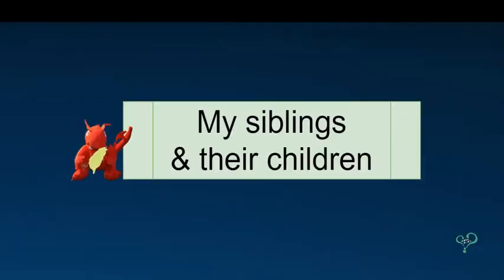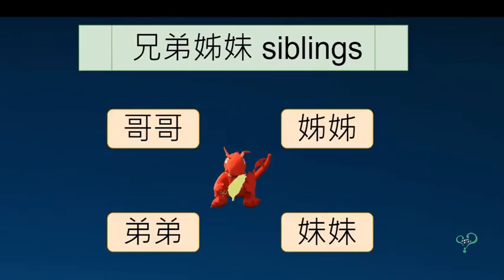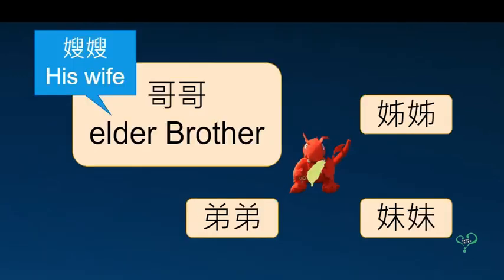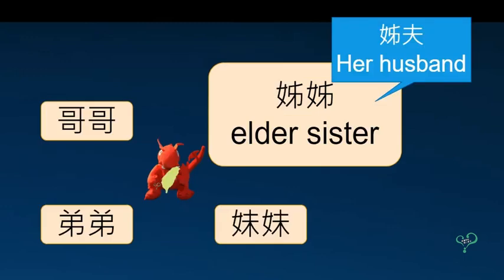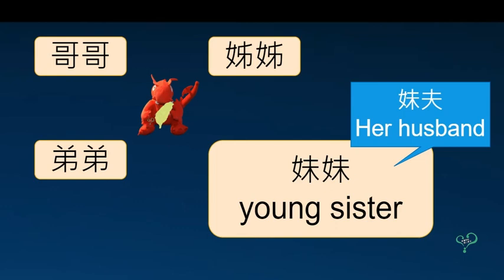First, my siblings and their children. 兄弟姐妹 means siblings. When I am talking to someone and mention my older brother, I will call him 哥哥 and call his wife 嫂嫂. My younger brother is my 弟弟 and his wife is my 弟妹. My older sister is my 姐姐, and I call her husband 姐夫. My younger sister is my 妹妹 and her husband is my 妹夫.